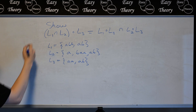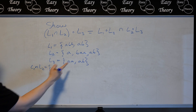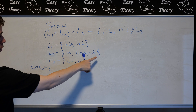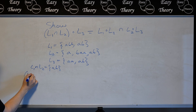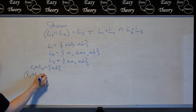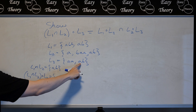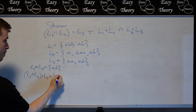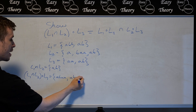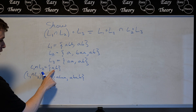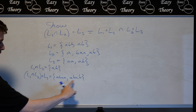Let's look at the left side: L1 intersect L2. That's going to be just the string AB — that's the only thing in common between the two. So then this concatenated with L3 means I'm going to take AB and put it with these two. So that's going to be AB·AA and then AB·AB. That's all we get.